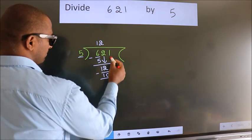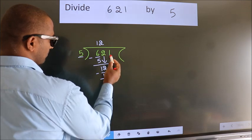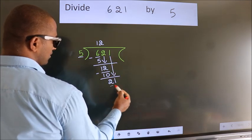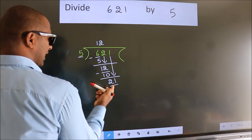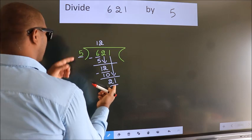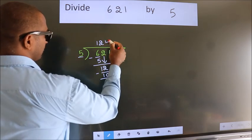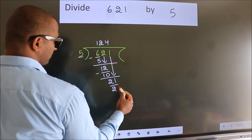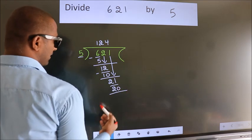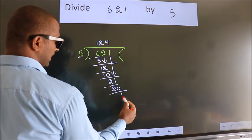After this, bring down the beside number. So 1 down. So 21. A number close to 21 in 5 table is 5 fourths 20. Now we subtract. We get 1.